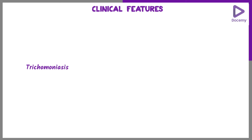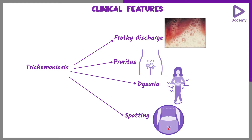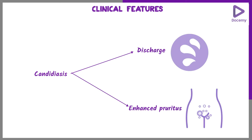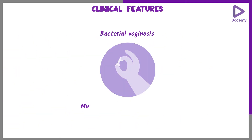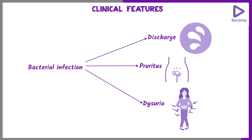Clinical features of a patient presenting with Trichomoniasis include a frothy discharge per vagina, pruritis, dysuria, and spotting. A patient with Candidiasis will complain of discharge and mainly intense pruritis. A patient with Bacterial Vaginosis will complain of a watery or mucus discharge with a malodor, as well as discharge, pruritis, and dysuria.